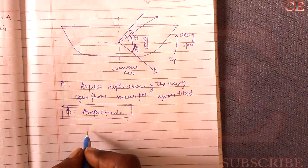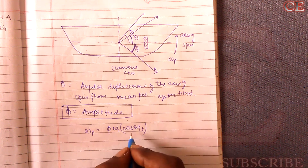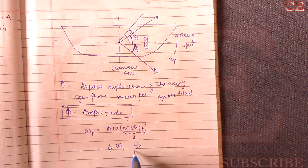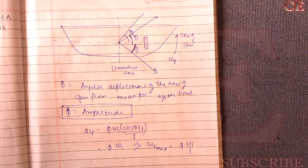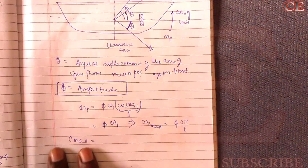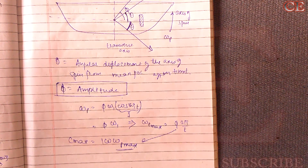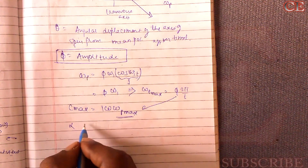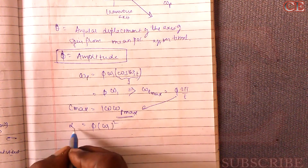The maximum gyroscopic couple is C_max = I·ω·ω_p(max), where we substitute the value of ω_p(max) from the previous expression. The maximum angular acceleration is α_max = φ·ω₁². These formulas are used to solve numerical problems on pitching of a naval ship.